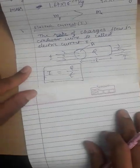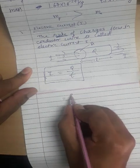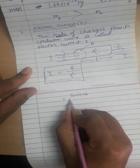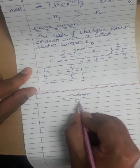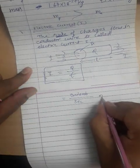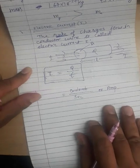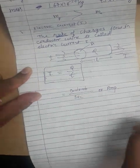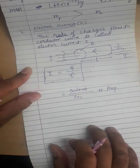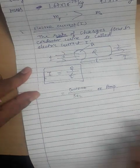Current is equal to charge divided by time. The unit of current is Ampere. So the SI unit of current is Ampere. We will carry on with the next topic. Thank you.